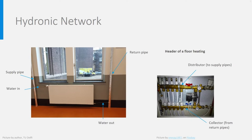You see here one of the radiators in the hydronic network of the building I am working in, with its supply and return pipes, and the connection between the pipes and the radiator. On the right, you see the header of a floor heating system with distributor and collector.